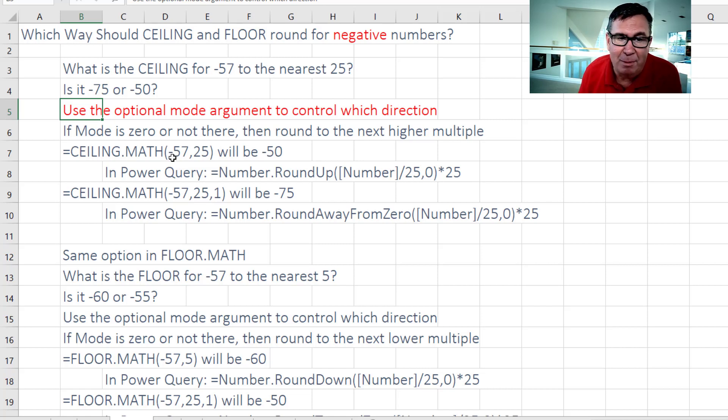So the ceiling.Math of minus 57, we're going to the higher number, will be negative 50. But if you add this mode argument, it will go the wrong way. The ceiling will go down towards negative 75.